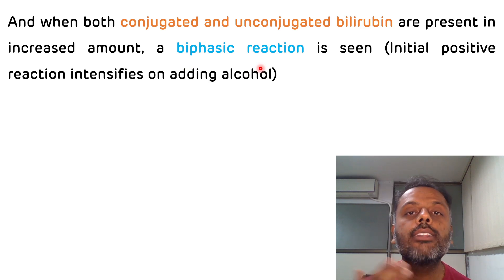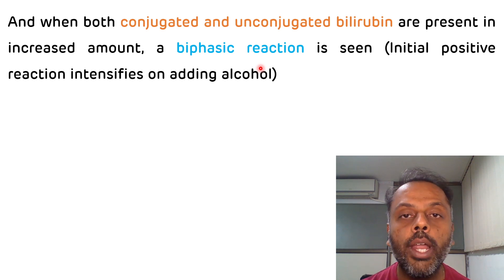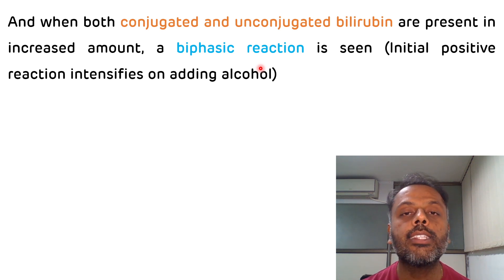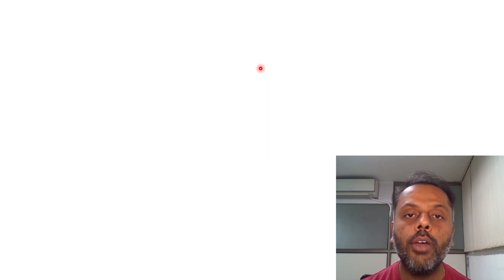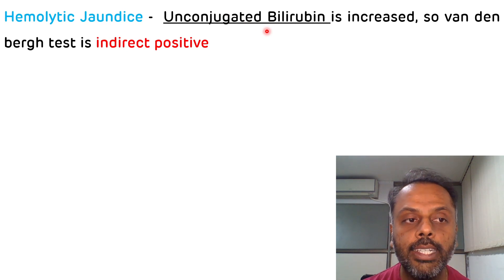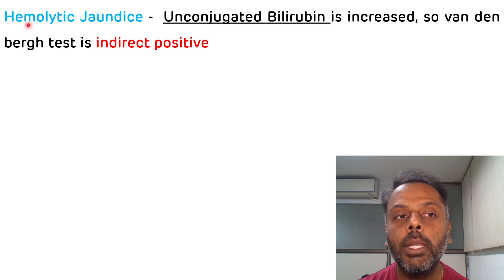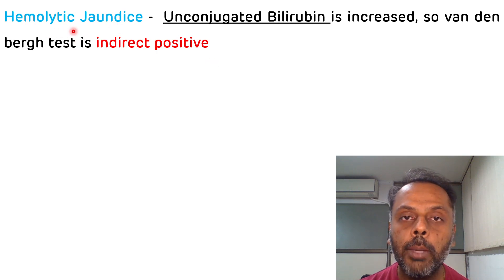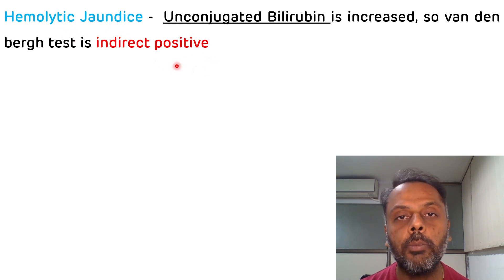There are three types of jaundice. One is prehepatic, that is hemolytic jaundice; then hepatic, that is hepatocellular jaundice; and posthepatic, that is obstructive jaundice. In hemolytic jaundice, unconjugated bilirubin is increased, so the Van den Bergh test will be indirect positive. In hemolytic jaundice, the Van den Bergh test gives an indirect reaction.